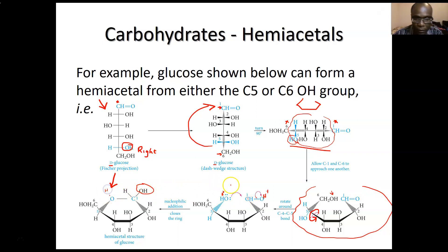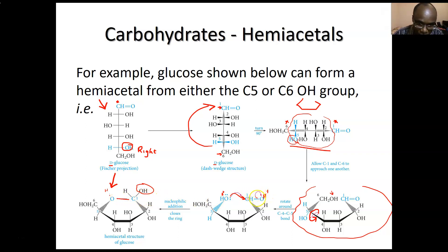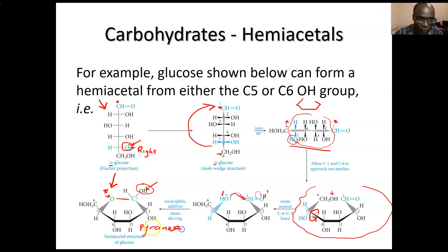The hydrogen that was on the attacking oxygen is lost — it could be the same hydrogen picked up on the other side. As the oxygen attacks the carbon, you're making that bond, the carbonyl opens up, and you make a six-membered ring called a pyranose. A similar mechanism makes a five-membered ring.